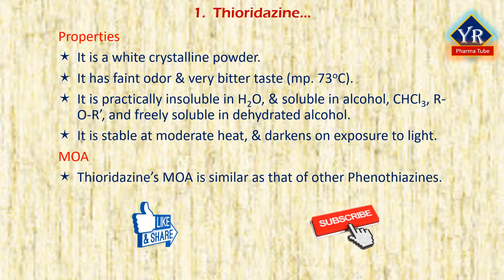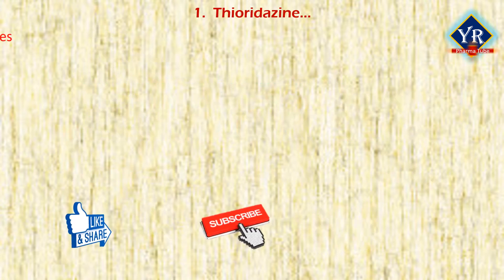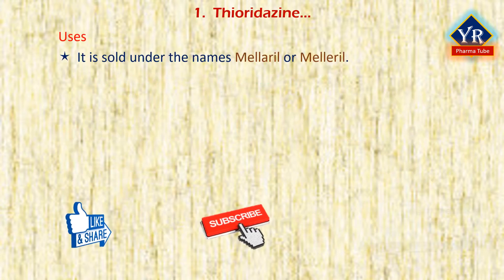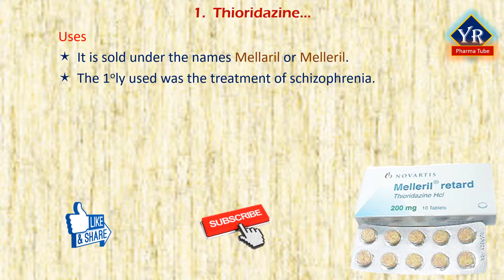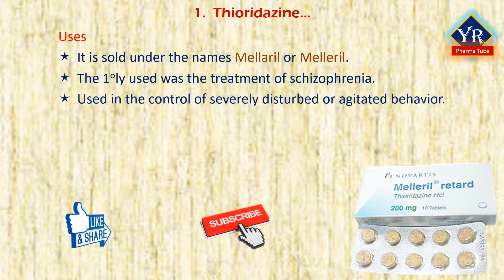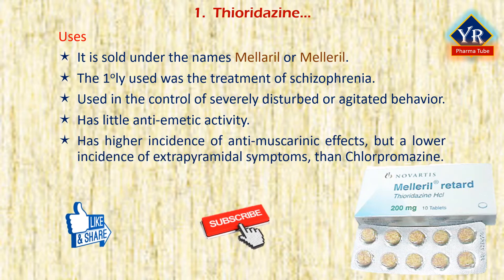Thioridazine's mechanism of action is similar to that of other phenothiazines as discussed in the previous videos. It is sold under the brand name Mellaril. It is primarily used in the management of psychosis including schizophrenia and in the control of severely disturbed or agitated behaviour. It has little anti-emetic activity but a higher incidence of antimuscarinic effects and a lower incidence of extrapyramidal symptoms than chlorpromazine. It was withdrawn in 2005 due to severe side effects including cardiac arrhythmias.